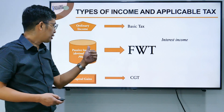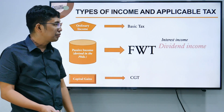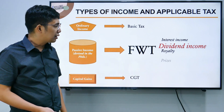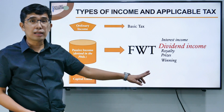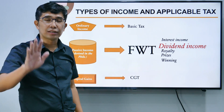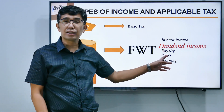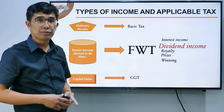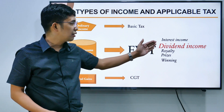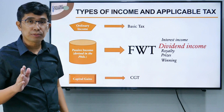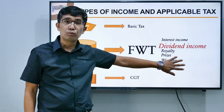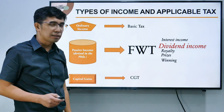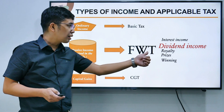There are five passive incomes subject to FWT: interest income, dividend income — which is our topic today — royalty, prizes, and winnings. Take note: these five apply to individual taxpayers. For corporations, prizes and winnings are removed from the list; they go to basic tax instead. Our topic in this video is final withholding tax on dividend income.